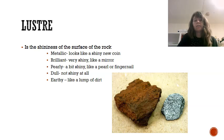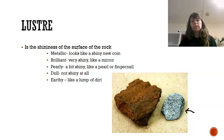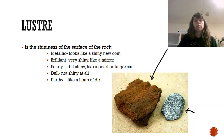Lustre is the shininess of the surface of the rock. You can see that the rock over here is quite shiny — it looks very metallic and we would call this a brilliant metallic rock, so you can use two words at the same time. This rock here doesn't have a very shiny surface at all, so its lustre is very low and dull — we'd say it was dull and earthy. Rocks can also be pearly, a bit shiny like a fingernail.